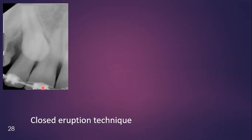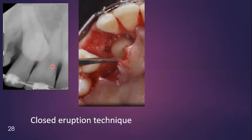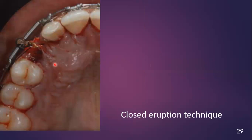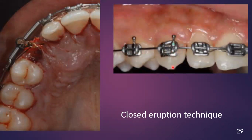Here is another example: an impacted canine touching the central incisor. The deciduous tooth has been removed and the permanent canine has been exposed. An orthodontic button and a golden chain have been placed, and then the flap is repositioned using the closed eruption technique. After six months, the canine is fully erupted.